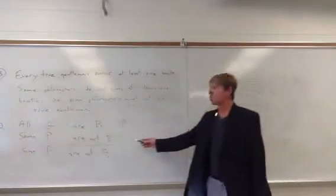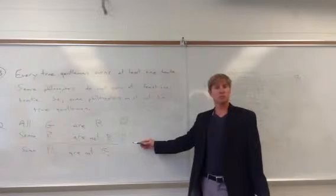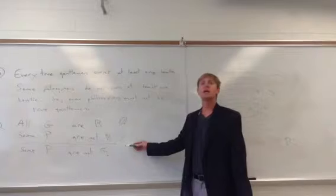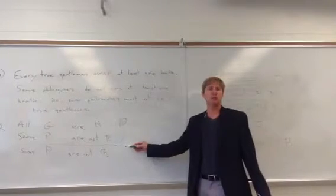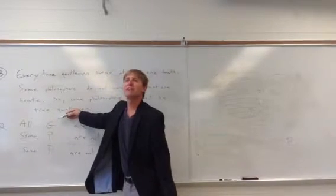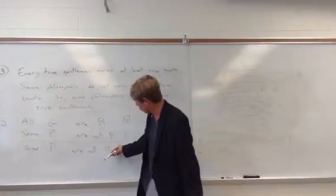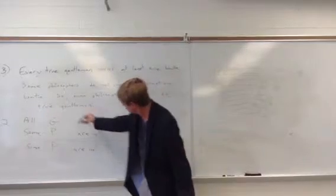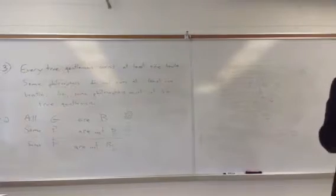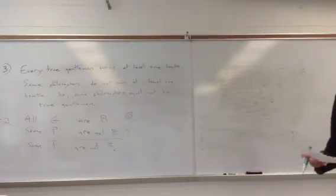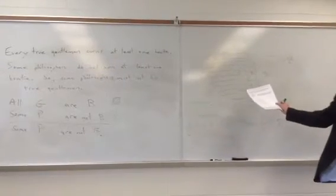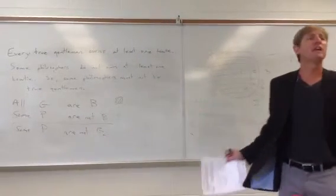Now, because our conclusion is an O statement, G, which is the predicate, must be distributed in its corresponding premise. And good news, G is the subject of an A statement. So, our term that distributes in the conclusion distributes up here in the premise as well. So, this one passes the distribution rules as well as the negation rules. And it confirms exactly what we've already shown via Venn diagram.